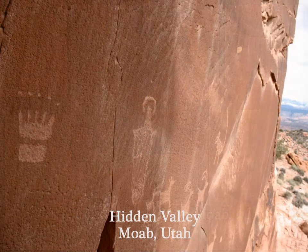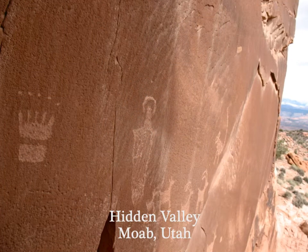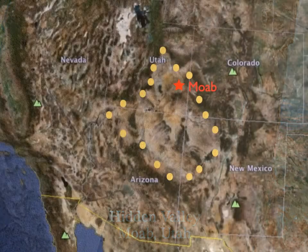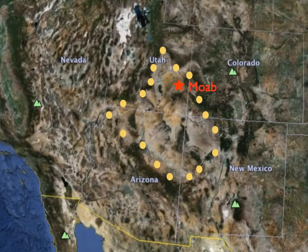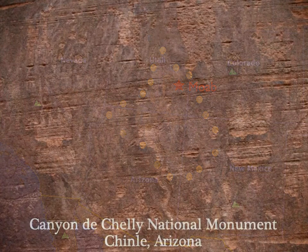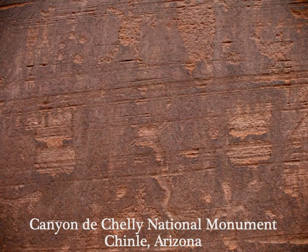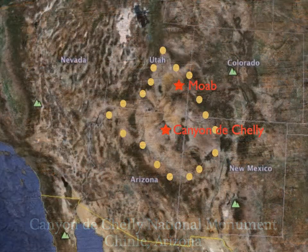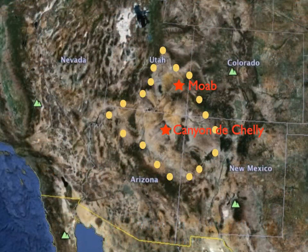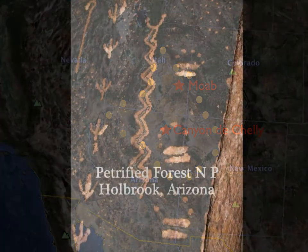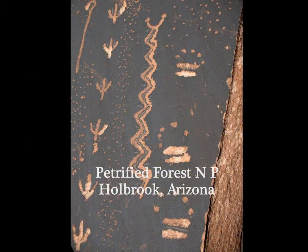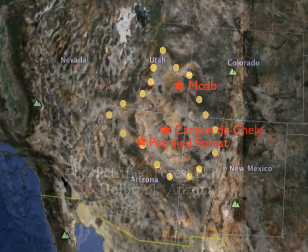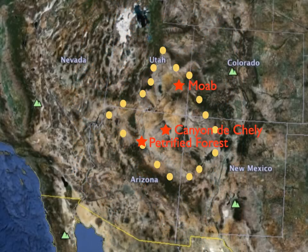These examples are all from the Moab area — you can see the segmented feet and the tined toes. One in Hidden Valley is probably a winter solstice marker. Similar design elements also appear at Canyon de Chelly National Monument, a couple hundred miles south in Chinle, Arizona, and at Petrified Forest National Park near Holbrook, Arizona. I've also seen photographs from Las Vegas with that symbol.